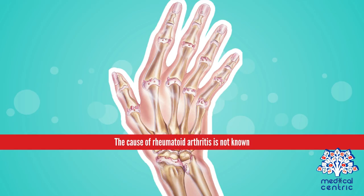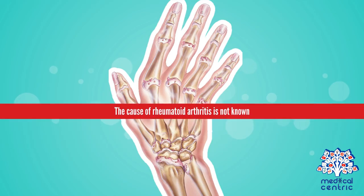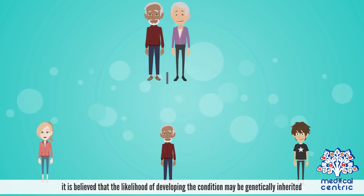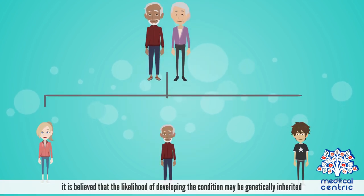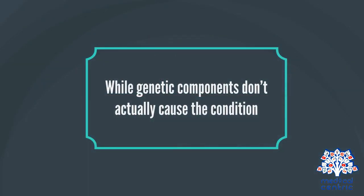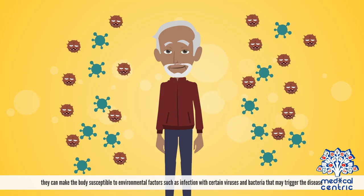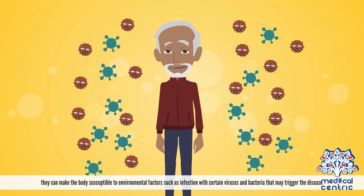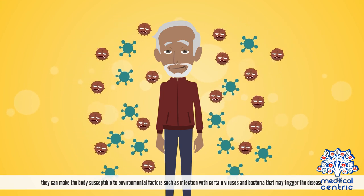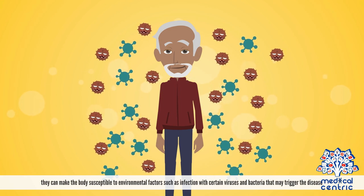The cause of rheumatoid arthritis is not known. However, it is believed that the likelihood of developing the condition may be genetically inherited. While genetic components don't actually cause the condition, they can make the body susceptible to environmental factors, such as infection with certain viruses and bacteria that may trigger the disease.